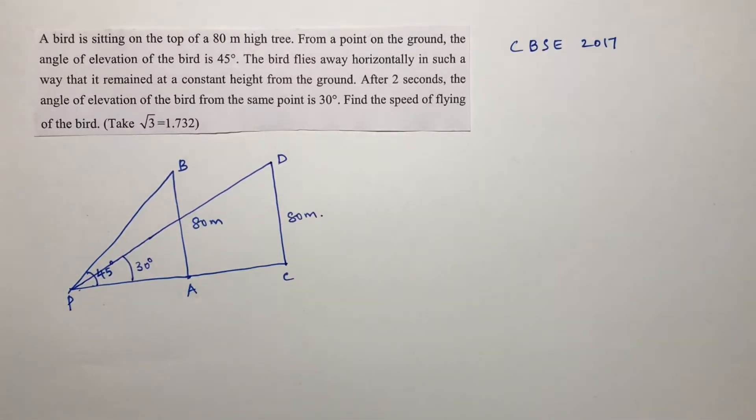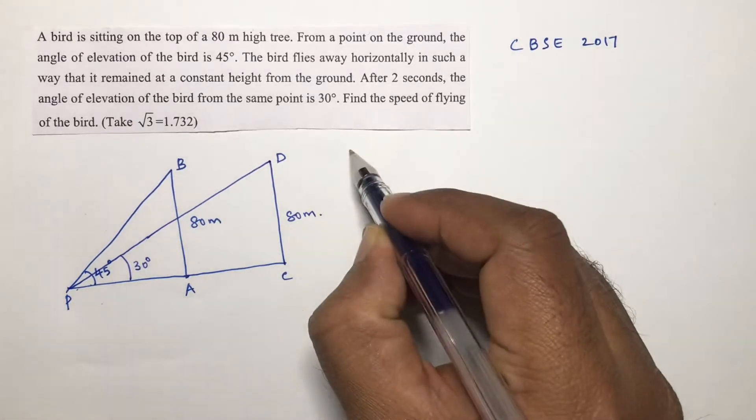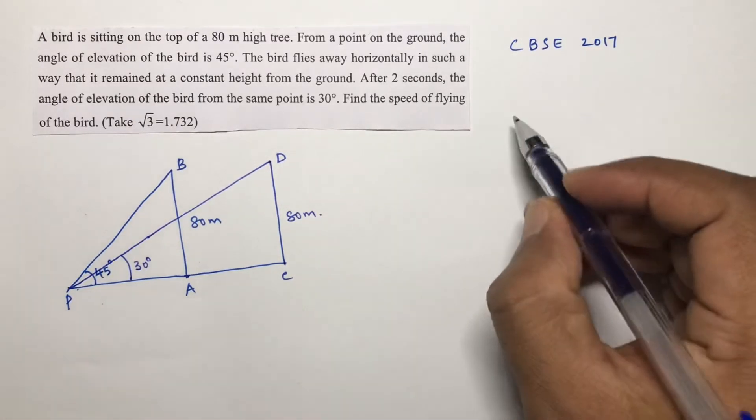Now find the speed of the bird. PA and AC are the distances, so they are asking to find the speed. So let the speed be...